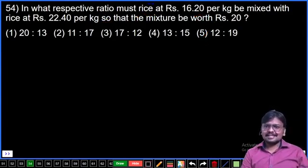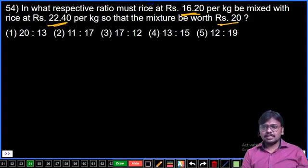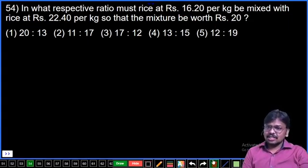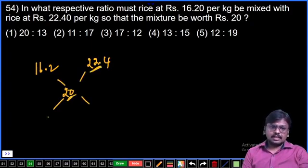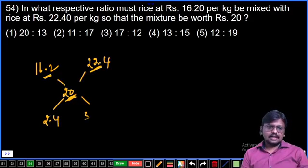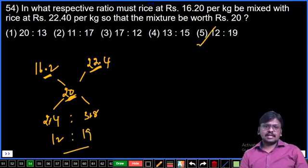Question number 54: In what ratio must rice at Rs 16.2 per kg be mixed with rice at Rs 22.4 per kg so that the mixture is worth Rs 20? Type 1 price 16.2, Type 2 price 22.4, mixture price 20. Using allegation rule: difference between 22.4 and 20 is 2.4, difference between 20 and 16.2 is 3.8. The ratio is 2.4 to 3.8, which simplifies to 12 to 19. Answer: fifth option.